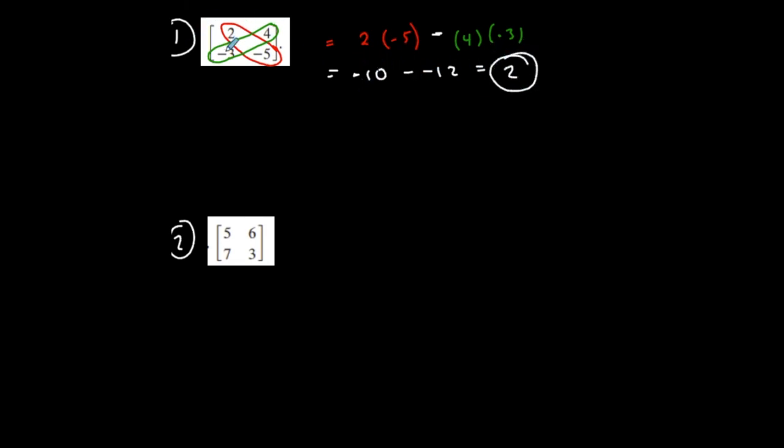And the determinant of a matrix should give a scalar value. And I don't know if you remember when we talked about inverses, inverses of a matrix. If the determinant of the matrix is 0, then the inverse of the square matrix doesn't exist. So we're taking determinants of square matrices.